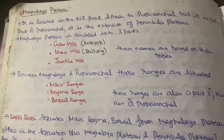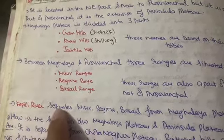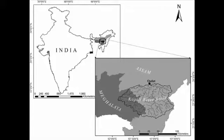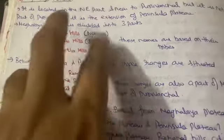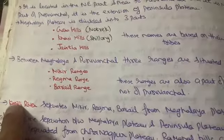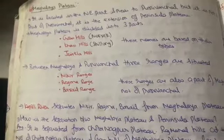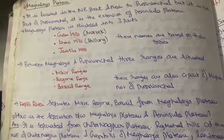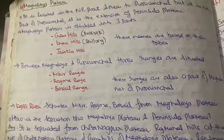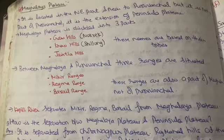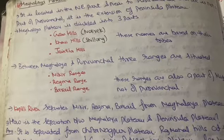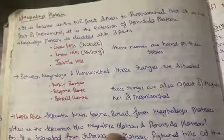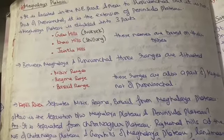There is also the Kapili River, which separates the Maikar, Regma, and Barrel ranges from the Meghalaya Plateau. These ranges lie on the right side of the Meghalaya Plateau, and the Kapili River flows between these ranges and the Meghalaya Plateau. I am showing this on the map — if you have any doubts, you can comment and I will clarify.